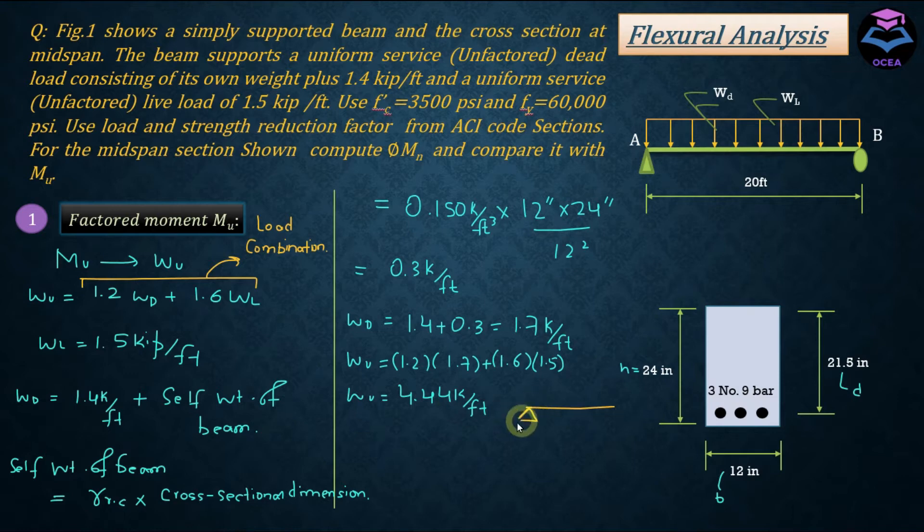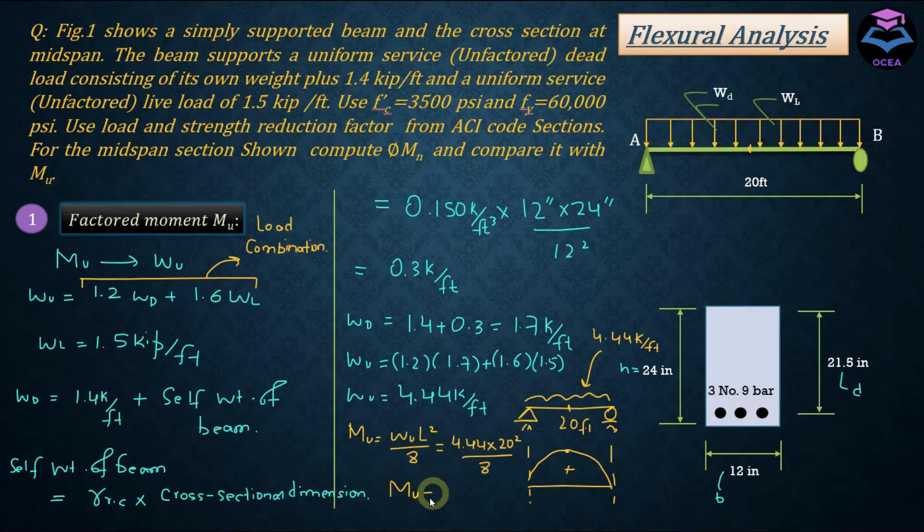So we have a beam which is subjected to a UDL of intensity 4.44 kip per foot and has a length of 20 feet. We know that in this case bending moment will be maximum at the center, decreasing towards the support. Since we need to calculate MU here at the midspan of this beam, the value of moment here is equal to WU L squared by 8. If we just plug in the value of W here and L equals 20 feet, MU is equal to 222 kip-feet. So the bending load effect coming at the center span of the beam is equal to 222 kip-feet.